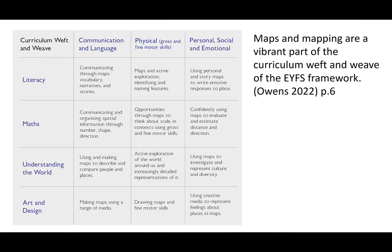This extract from the document reminds us how much different areas of learning interweave — what I call the curriculum weft and weave. We have four strands: literacy, maths, understanding the world, and art and design, all intertwining with communication and language, physical, and personal, social and emotional areas of learning. Maps and mapping are a vibrant part of this. For example, at the maths and communication interface, maps help children organise spatial information and talk about it. In maths and personal/social/emotional, maps help children evaluate and estimate distance and direction.